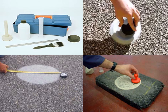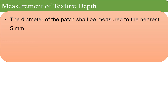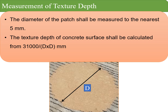The photograph shows the instruments required to conduct the sand patch test in the top-left photograph. On the top-right, the sand is being poured and rotated using the 64 mm diameter disc so that the sand is uniformly spread across the texture. The bottom-left photograph shows how the diameter of the sand patch is measured, which is then used to calculate the texture depth. The diameter of the patch shall be measured to the nearest 5 mm. The texture depth of the concrete surface shall be calculated using the formula: 31,000 divided by d squared, giving the result in millimeters.